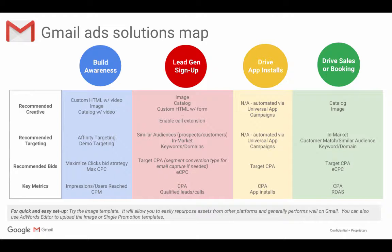For drive app installs campaigns, we recommend using universal app campaigns. And lastly, if you are looking to drive sales or bookings, you could use catalog or image. Targeting could be in-market, customer match, or similar audiences, as well as keyword or domain. Recommended bids are again target CPA and enhanced CPC, and key metrics to look at are CPA and ROAS.